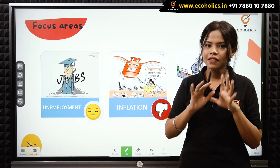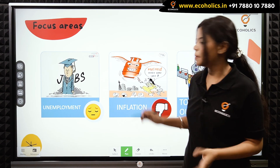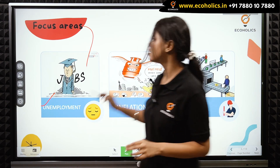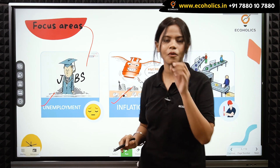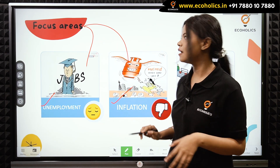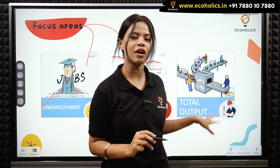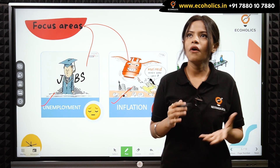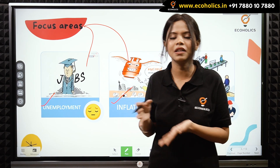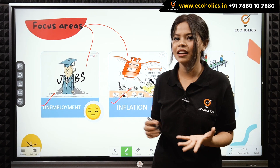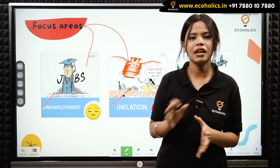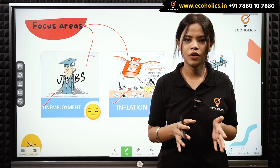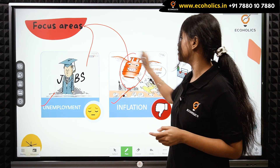In macroeconomics we basically deal with bigger issues and bigger problems. These include unemployment, inflation — which is a very hot topic — and total output, meaning how much production is happening in the overall economy. We also look at the level of GDP. These are just a few examples, as we have a vast array of topics which we study in macroeconomics.